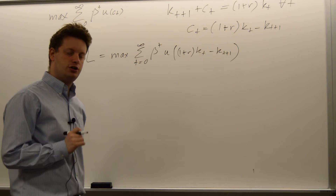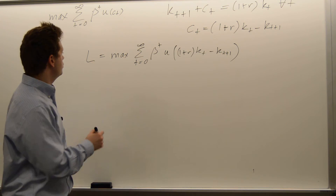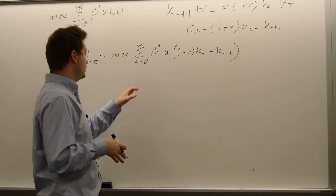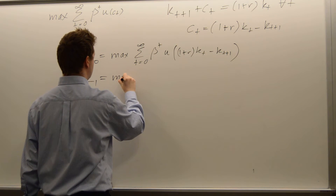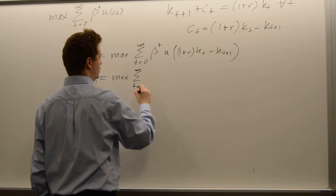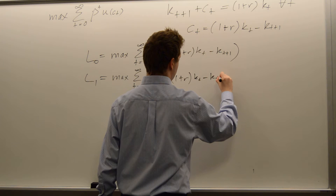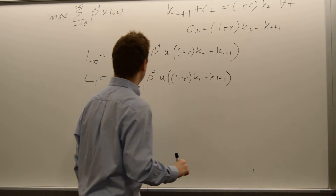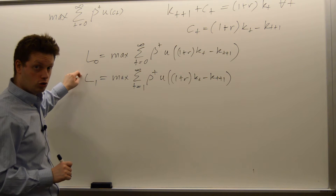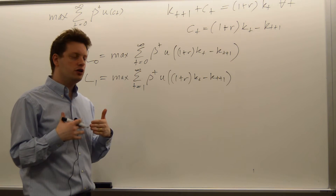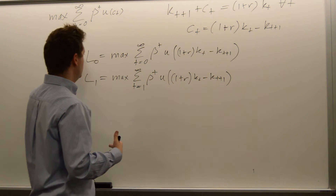I still have an infinite number of first-order conditions. Let's see how this problem looks tomorrow. I have this problem — let's call it L0 because that's today, t equals 0. Let's look at this problem tomorrow. This will be L1. We maximize the sum from t equals 1 to infinity, still beta to the t and still u of 1 plus r kt minus kt plus 1. These two are almost the same. So the maximization today is almost the same as the maximization I do tomorrow.